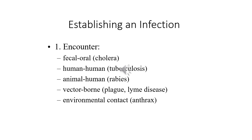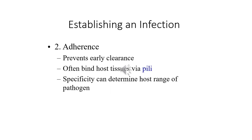Knowing these concepts, we look at how a particular infectious agent establishes an infection. If we know the chain of disease properly: after entering via the portal of entry, microbes use different transmission routes — fecal-oral, human-to-human, animal-to-human, vector-borne, or environmental. Prior to establishing an infection, microbes must adhere to host tissues — adherence or attachment. This prevents early clearance and allows the microbe to produce toxins or disease-related inflammatory reactions.